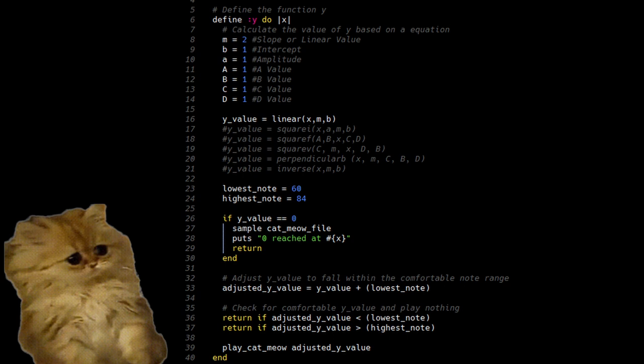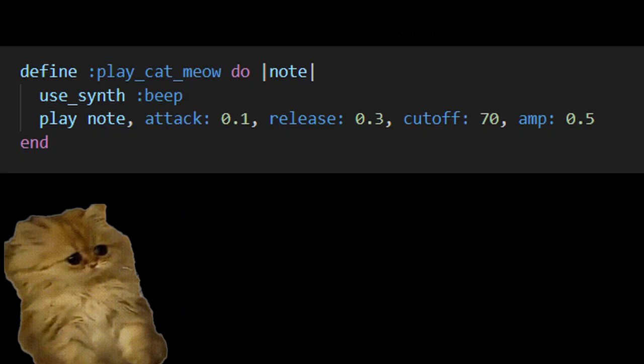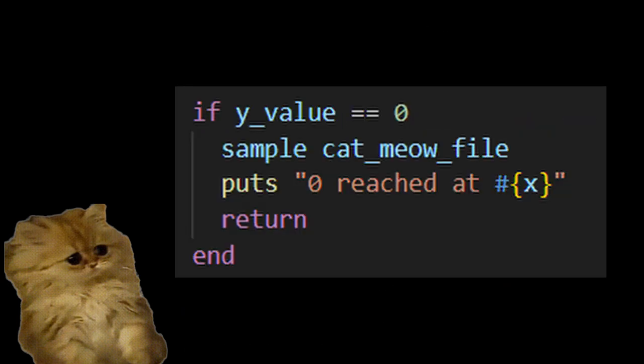Then I did a check. If the adjusted y is below the lowest note, still, then the y value is negative, and it shouldn't play anything. Same if the adjusted y value is higher than the highest note I set, because I also don't want to listen to extremely high sounds. If it is within the range, it will activate a function that will play a beep sound that I thought sounded kind of cute. Finally, I also included a check for zeros. Zeros are very important in a lot of problems in algebra. So if the value of y that is outputted is equal to zero, I have a little cat meow sound play, as well as an output to the console that we hit zero.